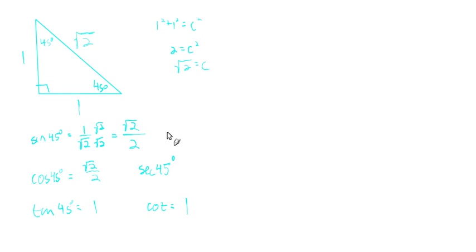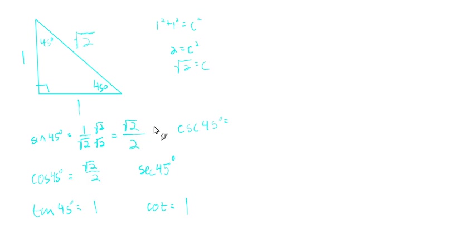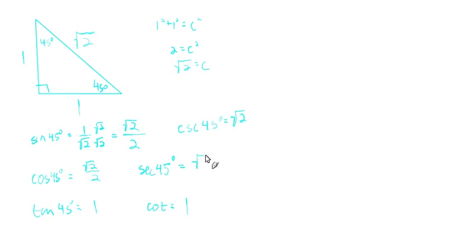Since the cosine and sine are both the same for 45°, the cosecant and secant are both going to be the same. Flipping √2/2 over gives √2/1, so the cosecant is also √2.